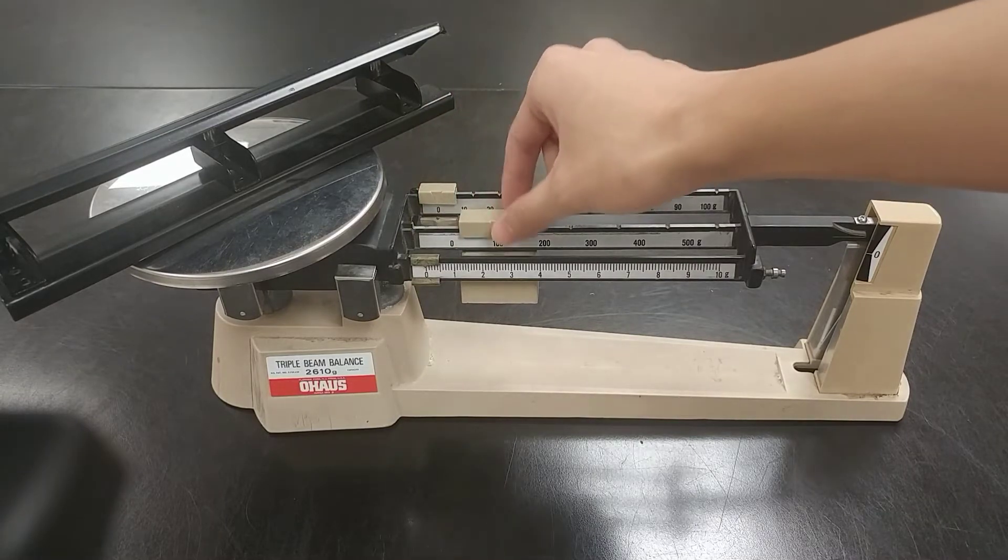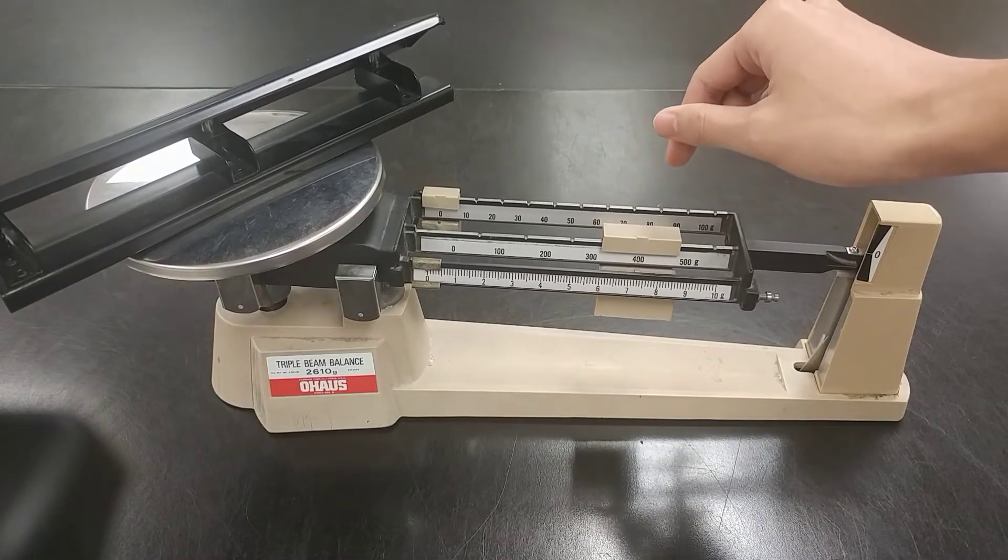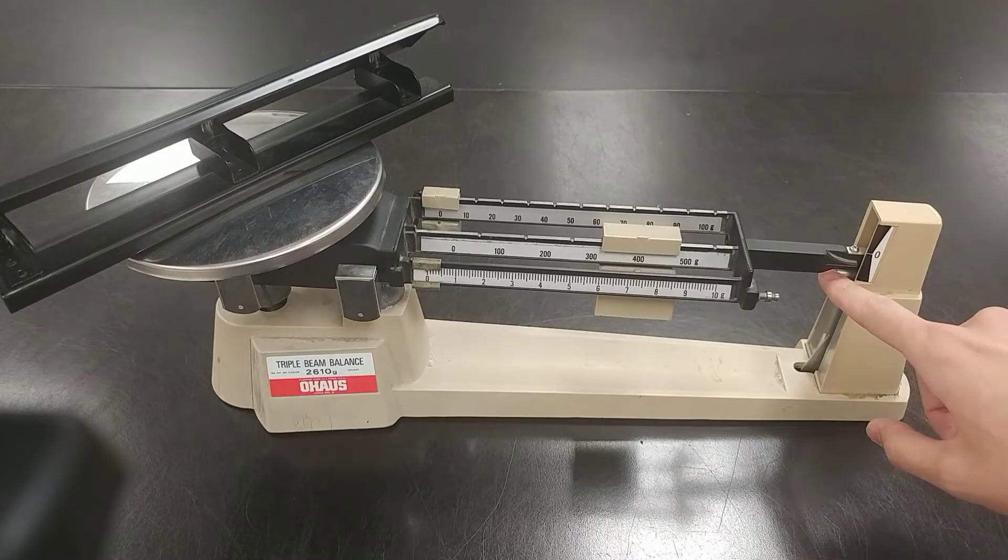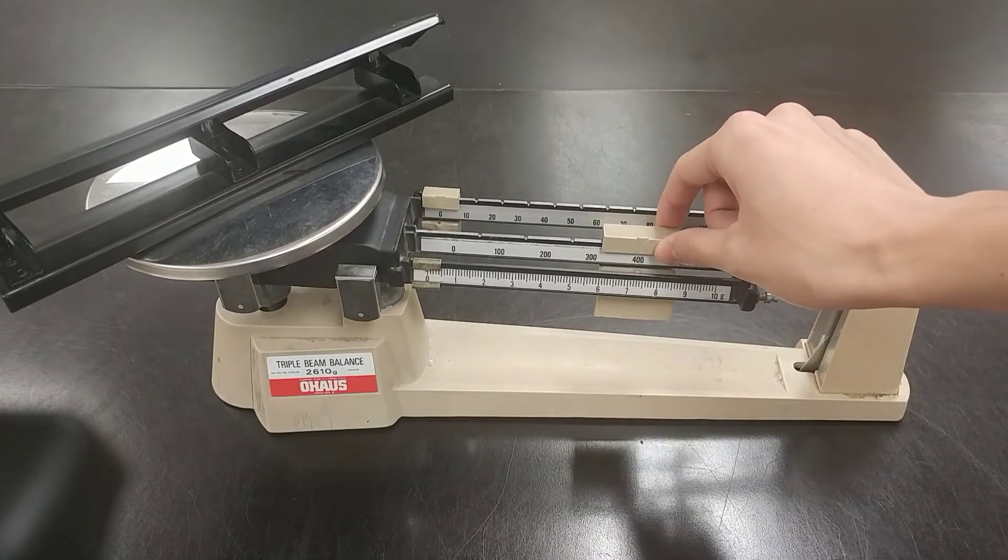Now we'll do the biggest one. 100, 200, 300, 400—okay. At 400, it goes down, which means it's too much because we want it to be exactly at zero. So we're going to go 100 back.